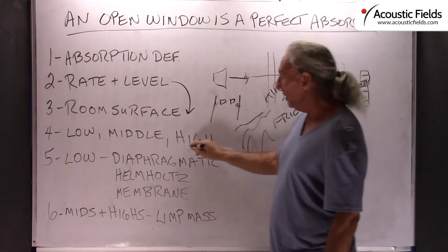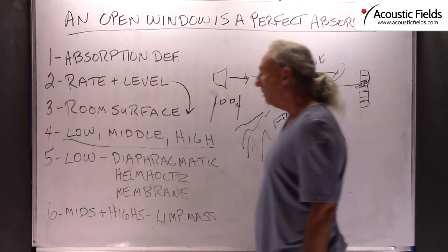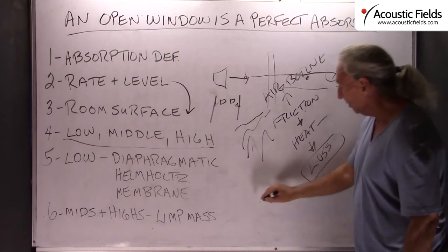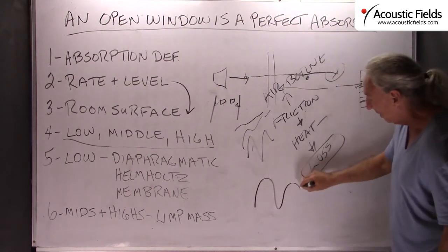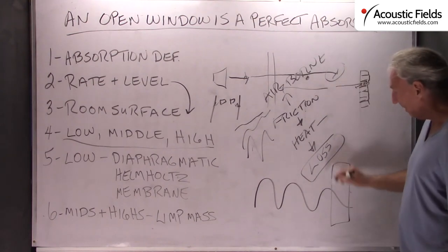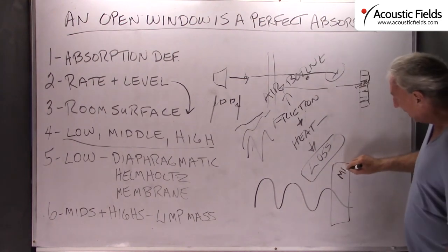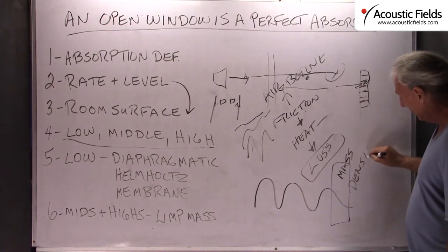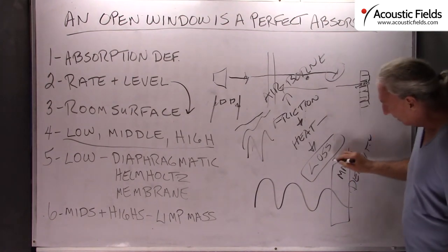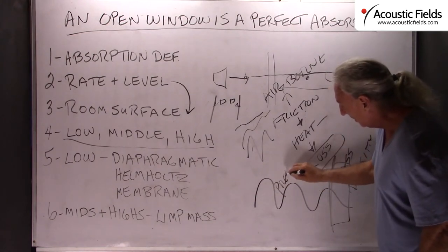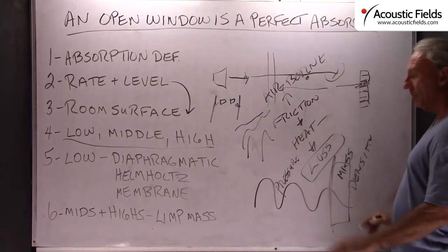Okay, so we have what? Three types of energy that we have to deal with: low, middle and high frequency. Low is always the problem because we're dealing with big waves. So we need big technology to stop big waves. You need lots of mass. You need lots of density. And you need a science that reacts to pressure. Very important.